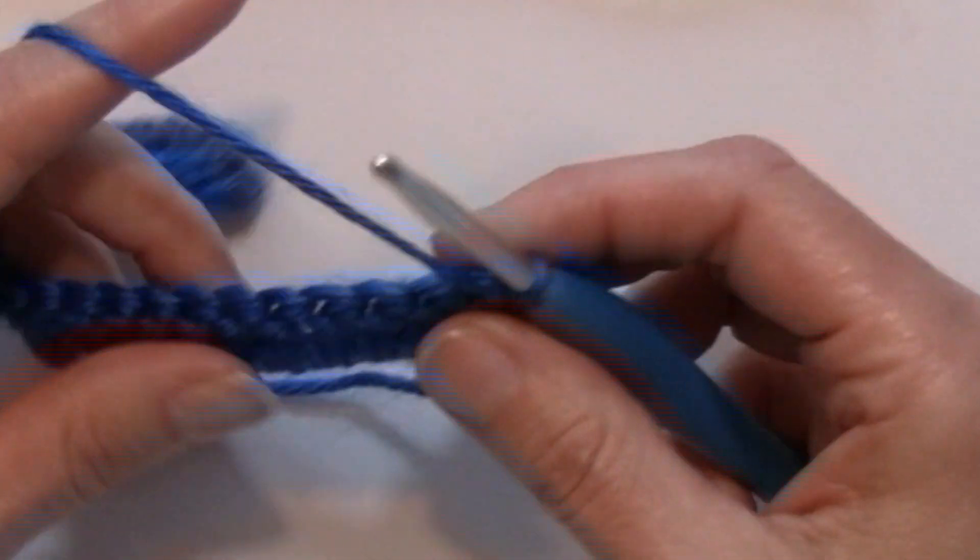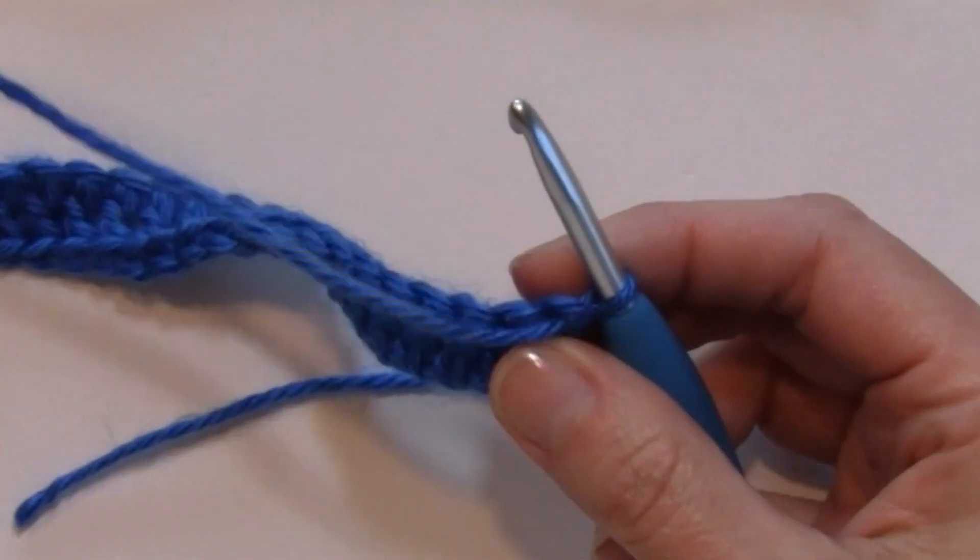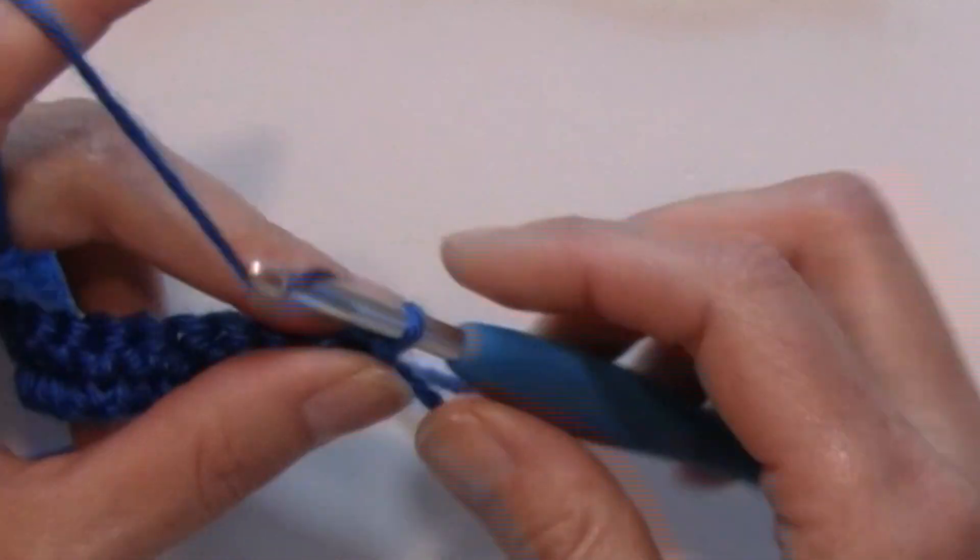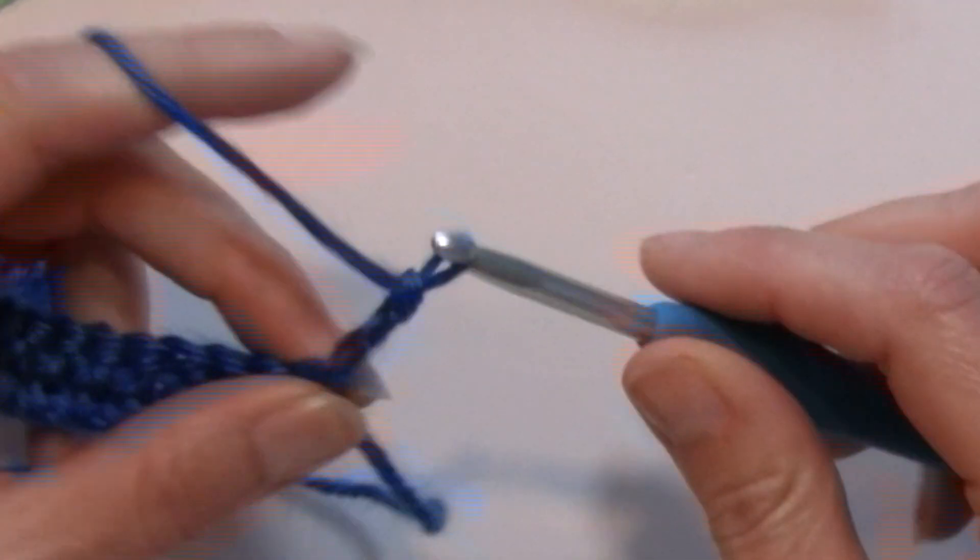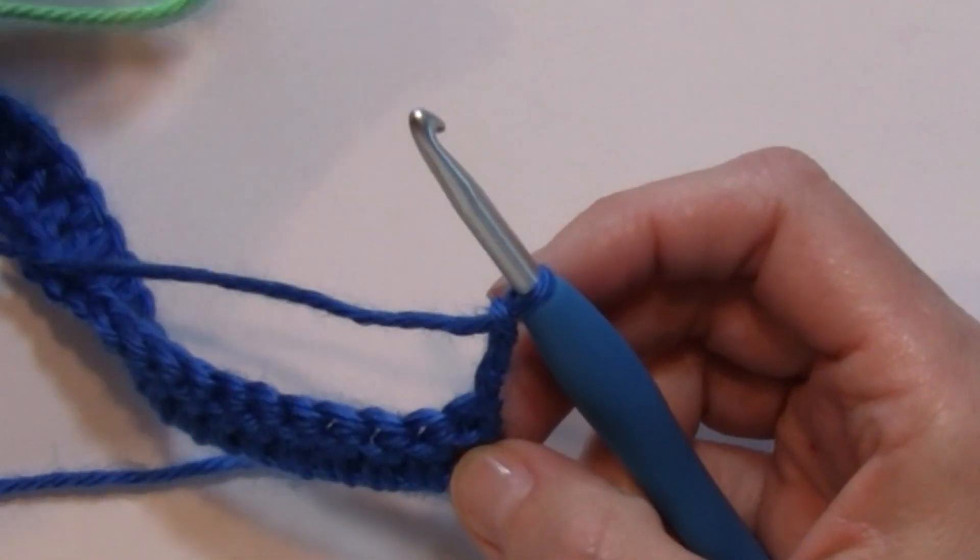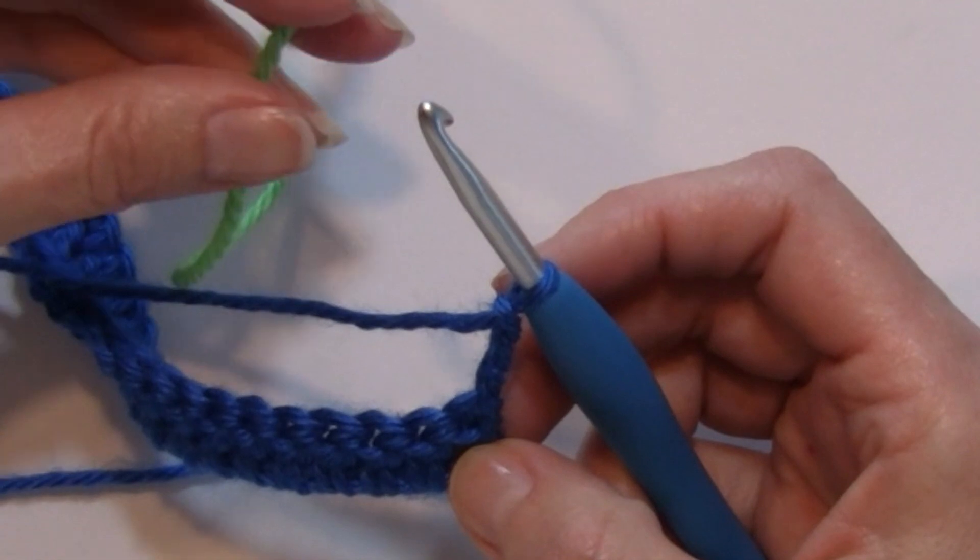I'm going to go ahead and for this row I'm going to be working my popcorn stitch and I'm going to be continuing on in this blue color and do my beginning chain and I'm going to start carrying that second color.